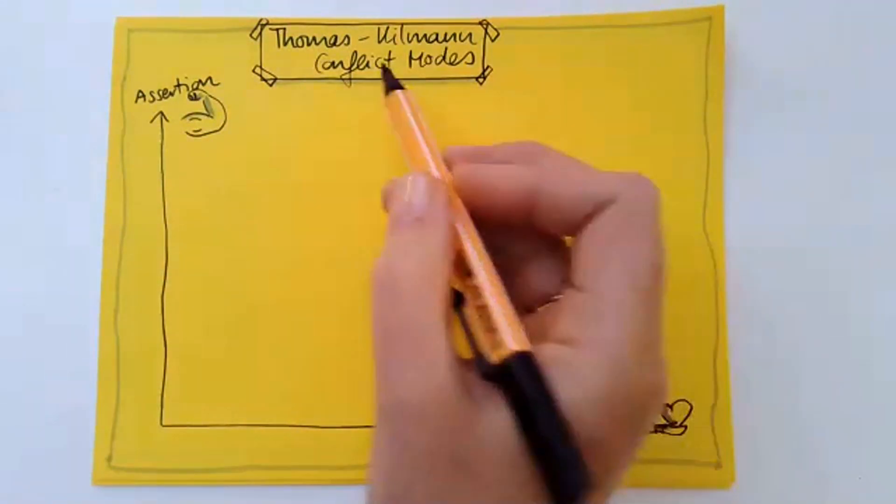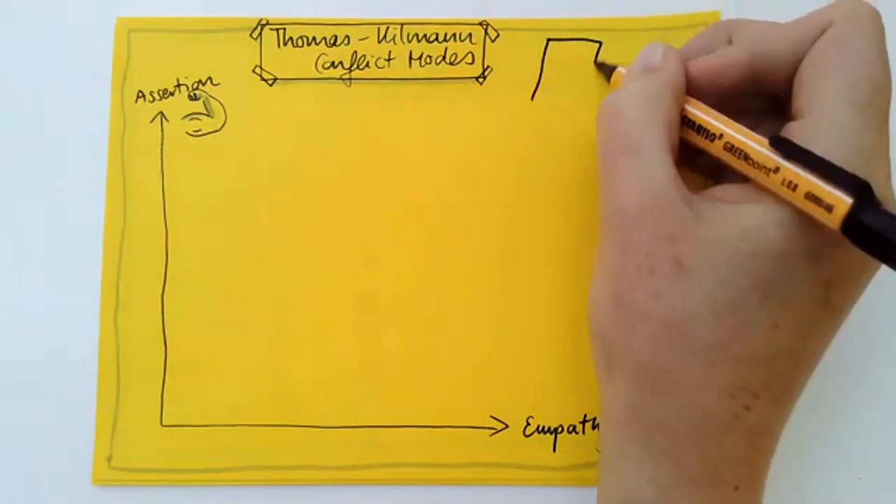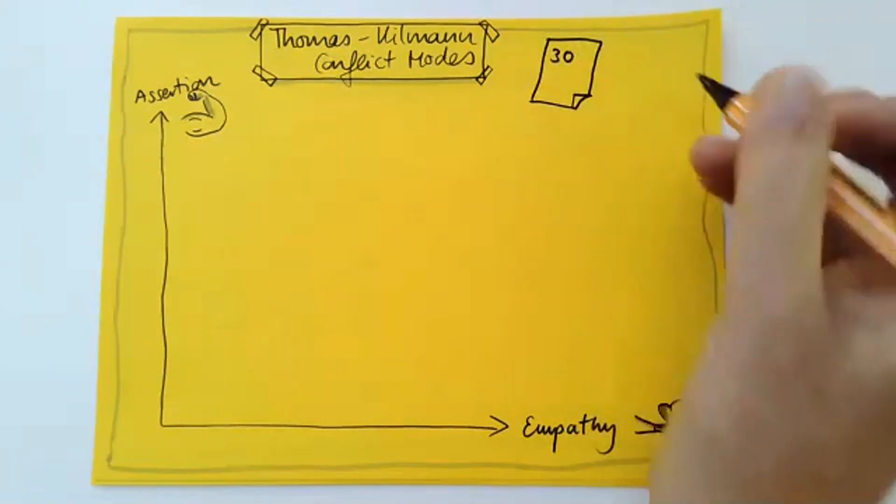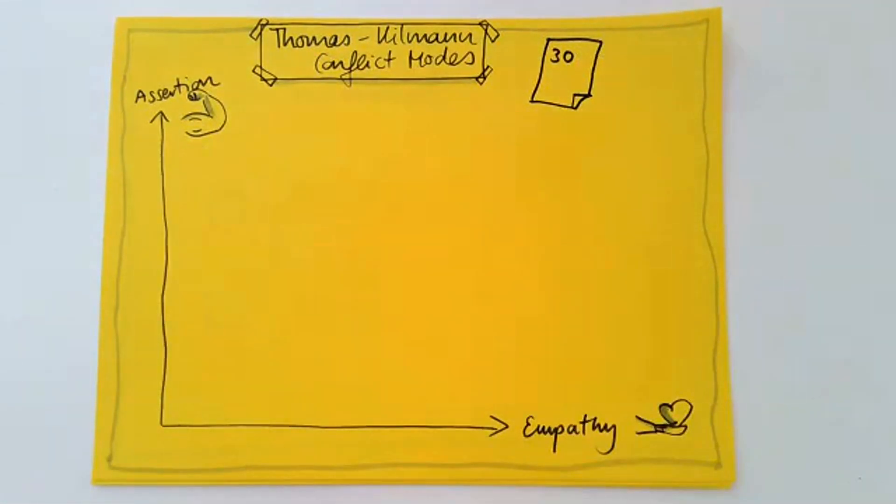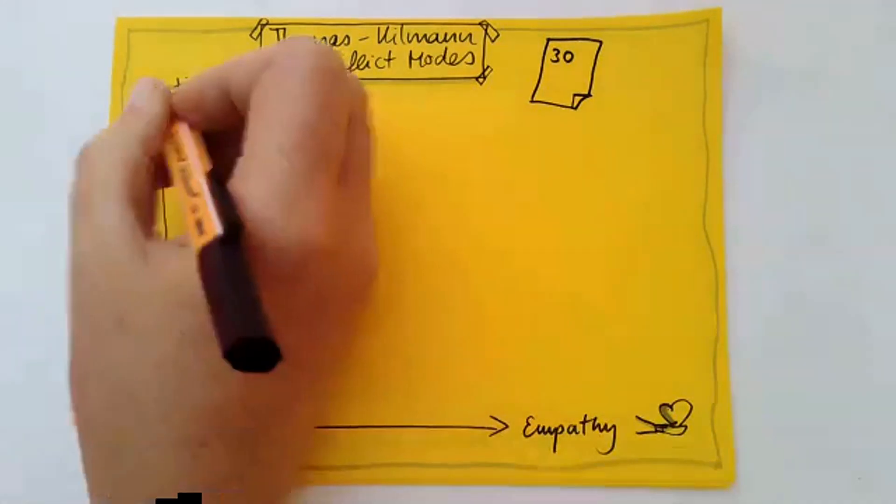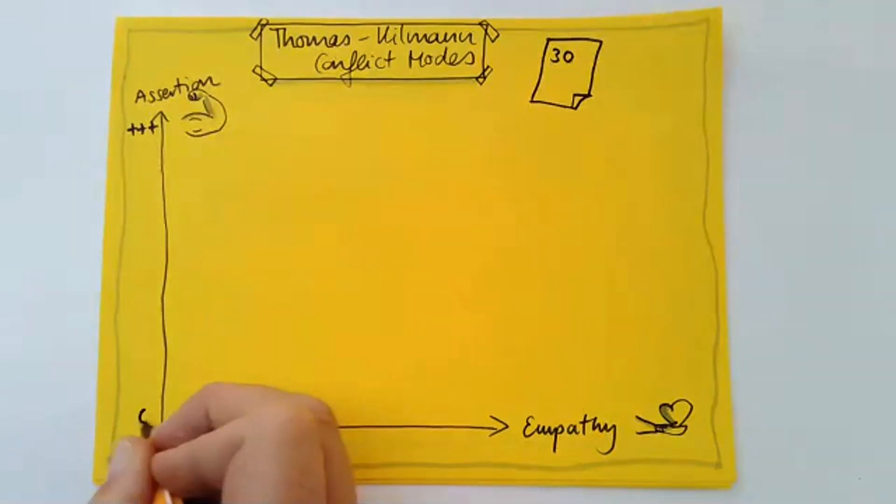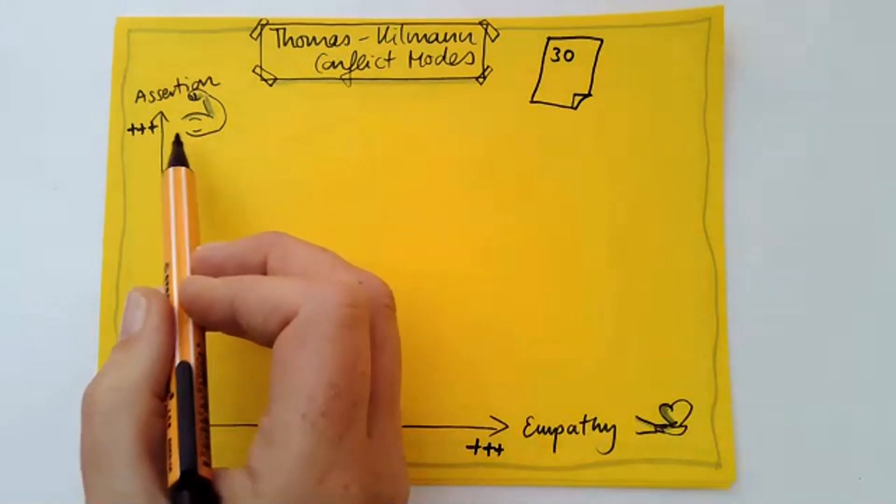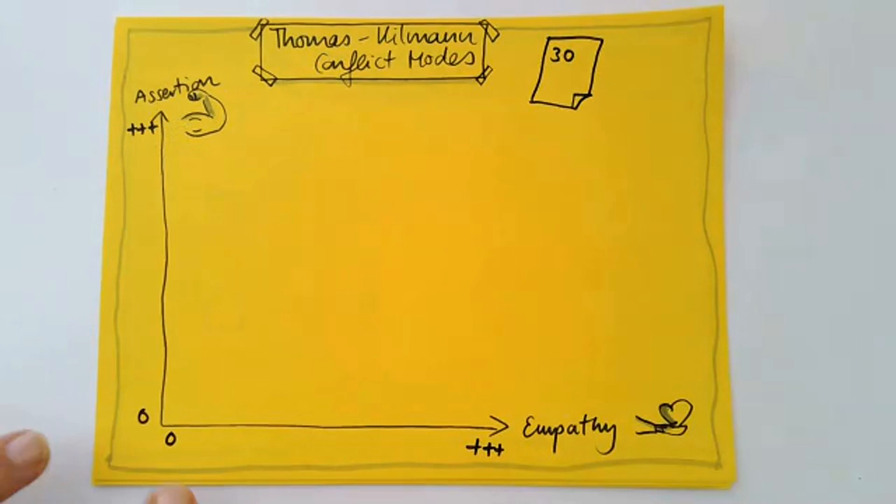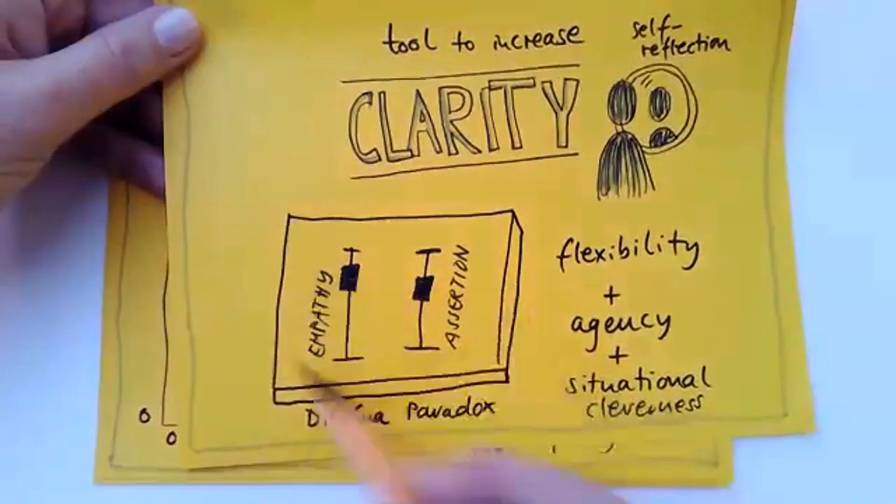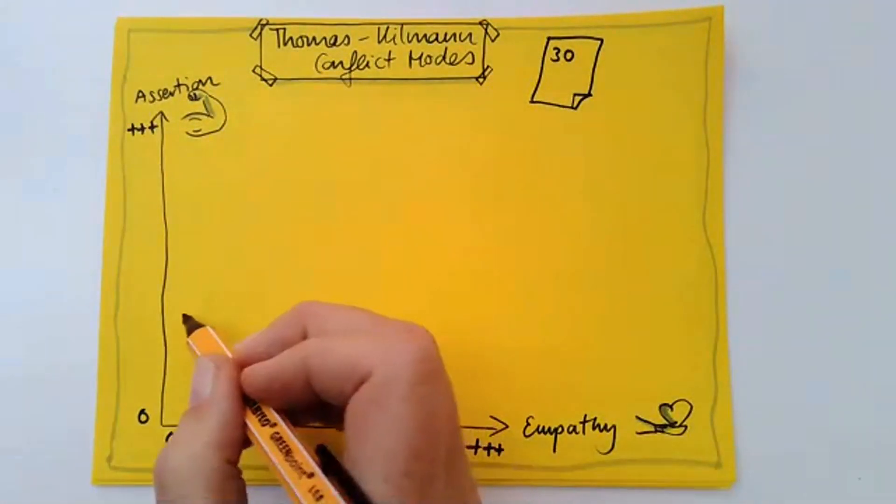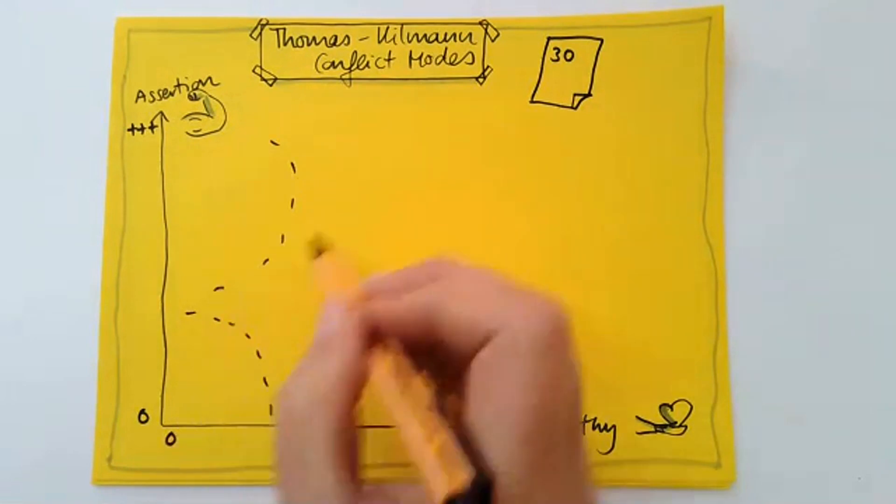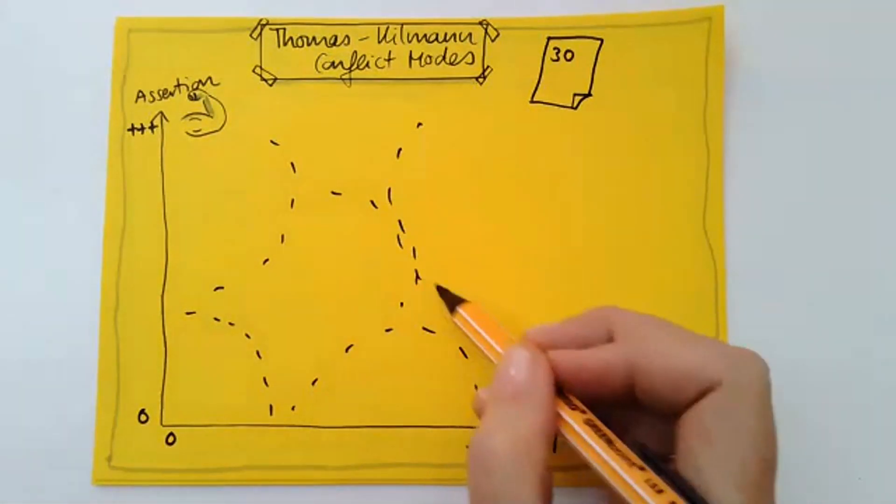And this is how it looks like when we take a look at the Thomas Kilman conflict modes. It's a scientific assessment with 30 questions. You can find it on the internet. But I think if you see it, you already get a sense of where your tendency might be. So on one axis, we have assertion ranging from high to low. And on the other axis, we also have ranging from low to high empathy. So the ability to walk in the shoes of the other person, the ability for perspective taking and assertion, the ability to speak up for your own rights and to assert them. So basically what we had earlier here, but only in a graph.